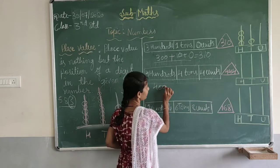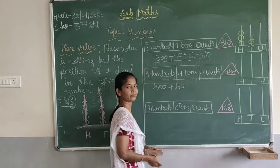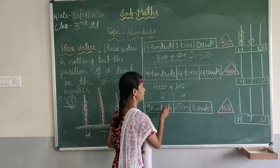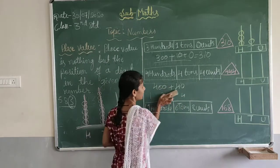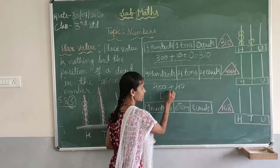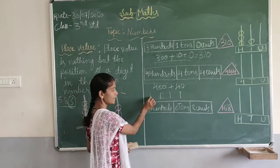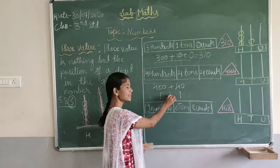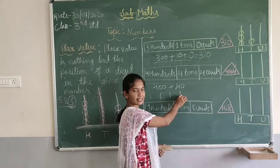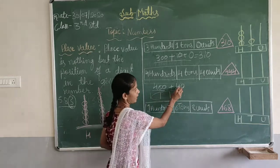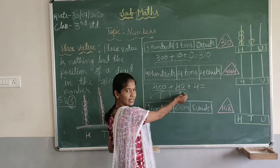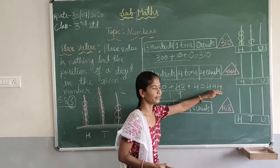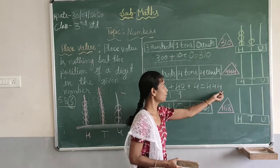Next, take 444. 400 plus 4 tens means 40, plus 4 units. 1 ten plus 1 ten plus 1 ten plus 1 ten equals 4 tens, which is 40. So 400 plus 40 plus 4 equals 444. For the abacus: 4 is in the units place so draw 4 beads; 4 tens so draw 4 beads on the tens rod; 4 hundreds so draw 4 beads on the hundreds rod.